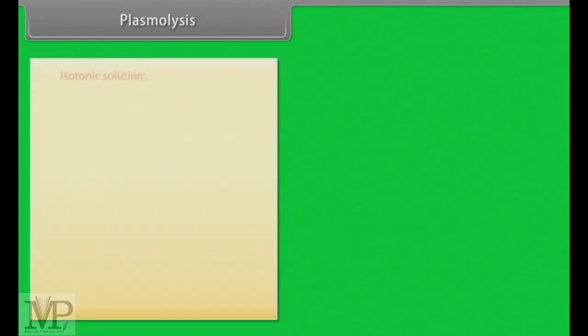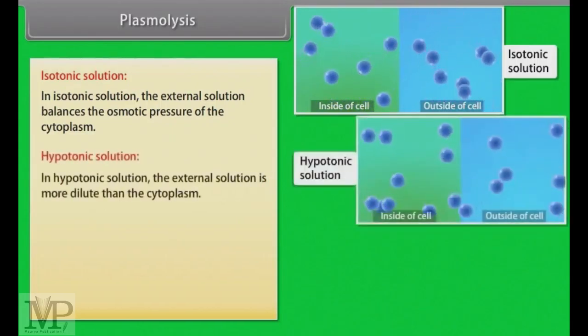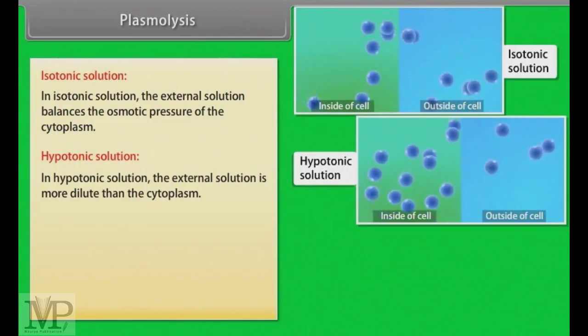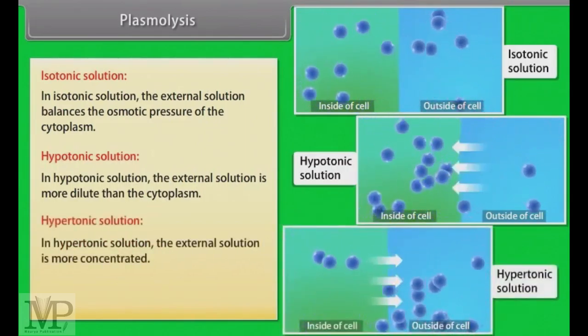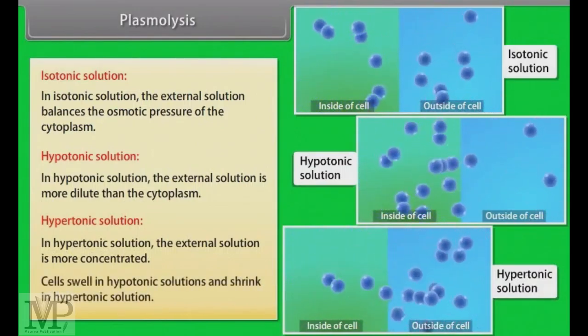Plasmolysis. The behaviour of the plant cells or tissues with regard to water movement depends on the surrounding solution. If the external solution balances the osmotic pressure of the cytoplasm, it is said to be isotonic. If the external solution is more diluted than the cytoplasm, it is hypotonic. And if the external solution is more concentrated, it is hypertonic. Cells swell in hypotonic solution and shrink in hypertonic ones.